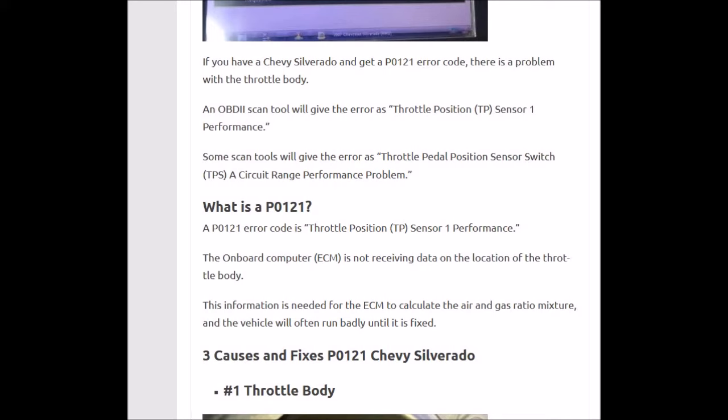So what is a P0-121 code? It's a throttle position sensor 1 performance — that's what an OBD2 scan tool will give you. Basically what it means is that the onboard computer, or the ECM, is not receiving any information on the location of where the throttle body is at.